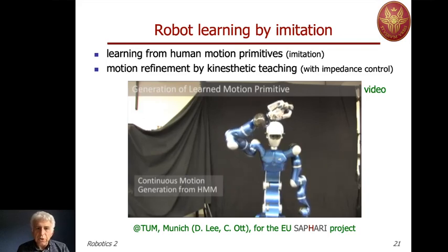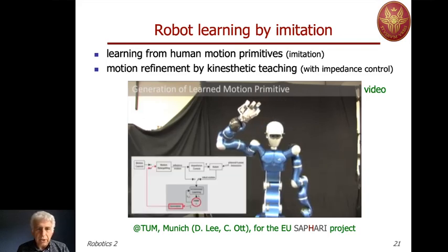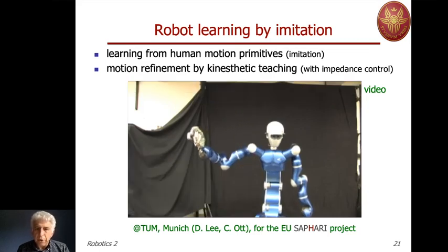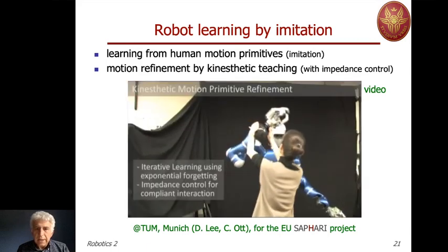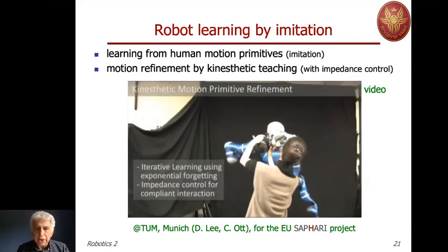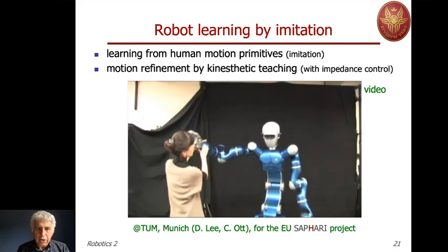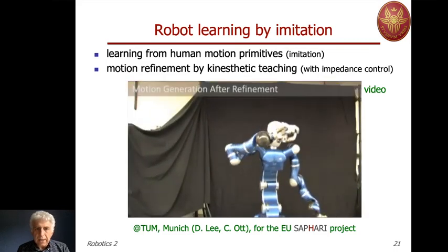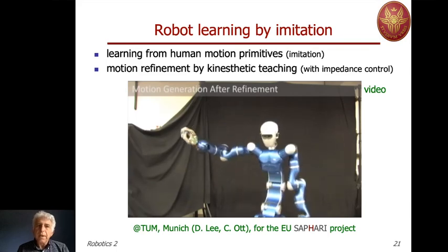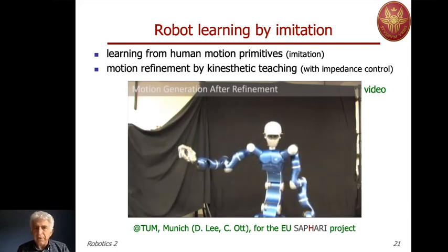This is the motion generated from acquisition using a hidden Markov model of the human motion. This is the motion being replicated and adjusted by the exchange of force between the human and the robot. And this is the smooth final motion obtained after the refinement. You can see that there is a learning phase through acquisition from imitation, and then a physical interaction with the human.